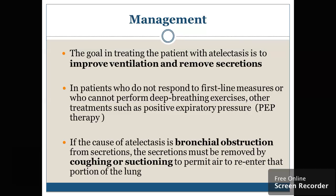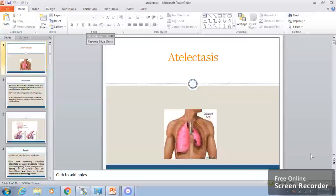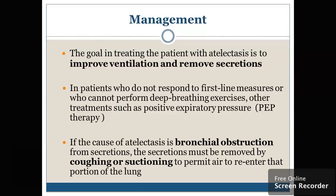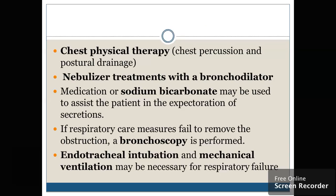Then comes the management. The goal in treating the patient with atelectasis is to improve the ventilation and remove the secretion. For patients who do not respond to first-line treatment, cannot perform deep breathing, or the patient is on a ventilator, they have to undergo PEEP therapy — that is positive expiratory pressure. If the cause of atelectasis is bronchial obstruction, the secretion has to be removed by coughing or endotracheal suctioning or tracheal suctioning to permit air to re-enter the affected portion of the lung. Chest physiotherapy, nebulizer, or bronchodilator is to be given. Medication or sodium bicarbonate may be used to assist the patient in expectoration of the secretion. If respiratory care measures fail to remove the obstruction, bronchoscopy is to be performed.